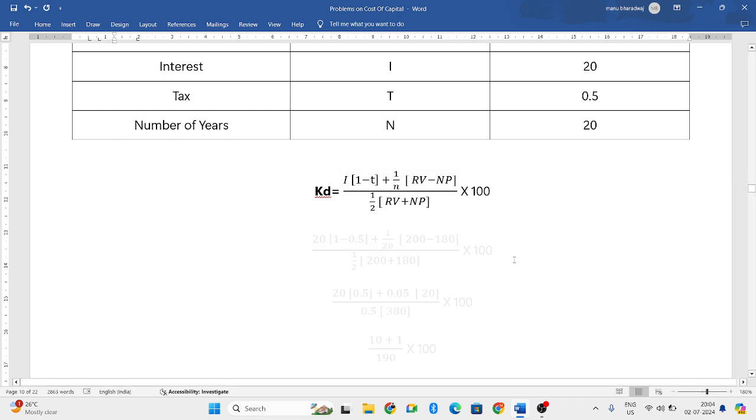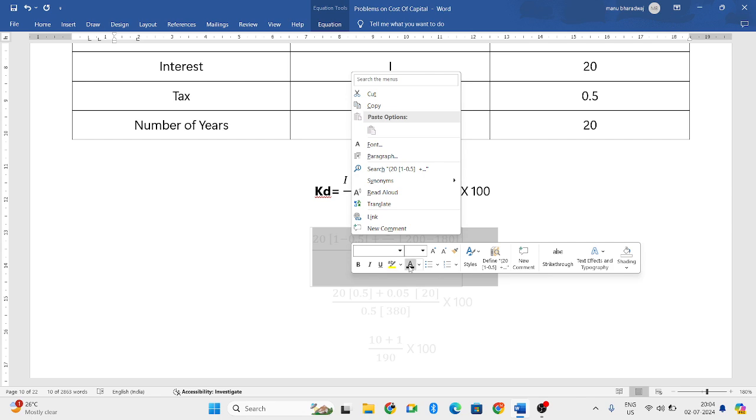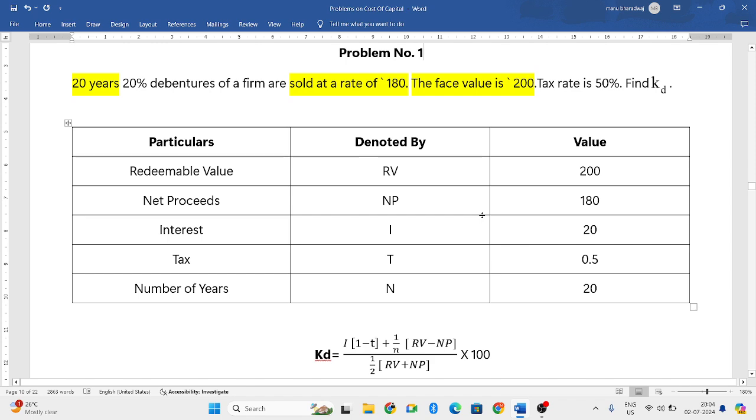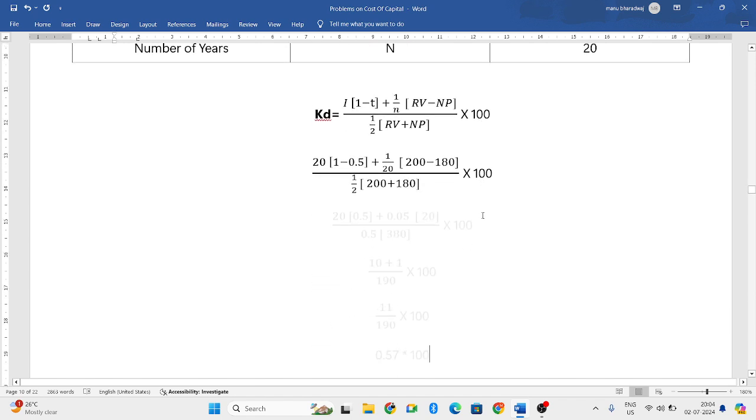Let us try to put the values. You can take a screenshot of this table so that when I am putting the values, you will easily understand. I is 20, 1 as it is, T is 0.5, 1 by N where number of years is 20.